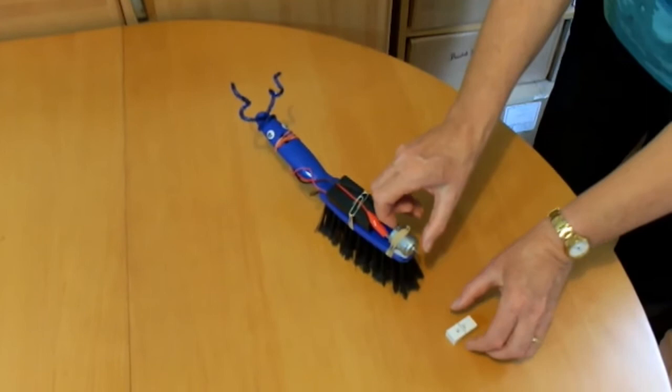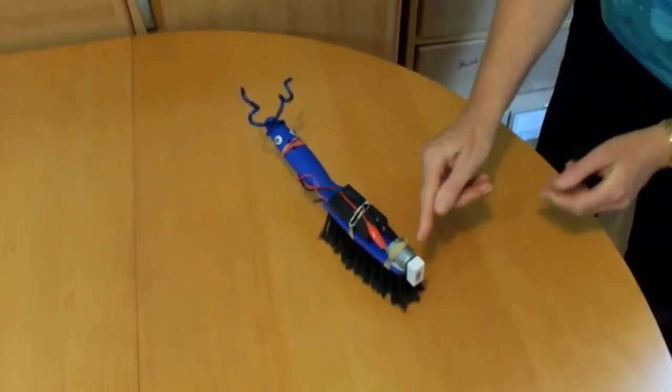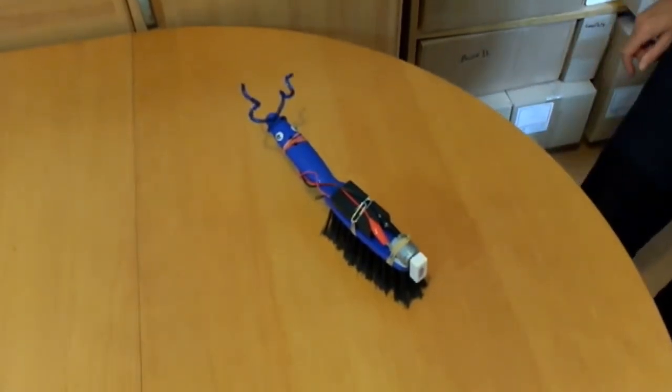If the eraser falls off, then hold the back of the motor and push it back on again. If it keeps falling off, you can use a small blob of blue tack to help hold it in place.